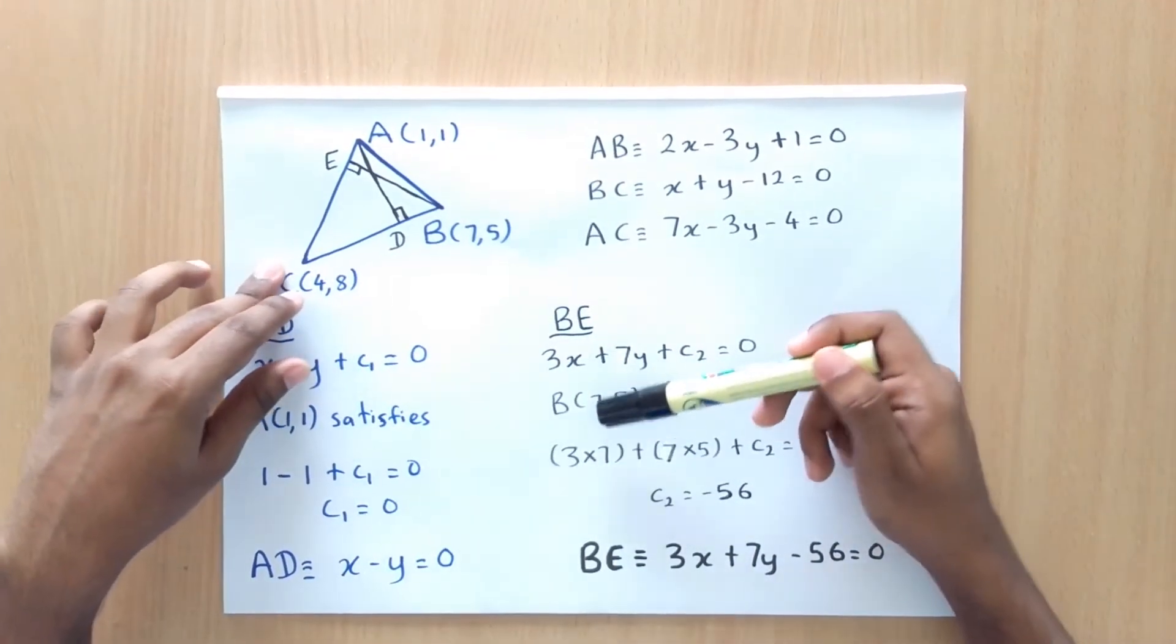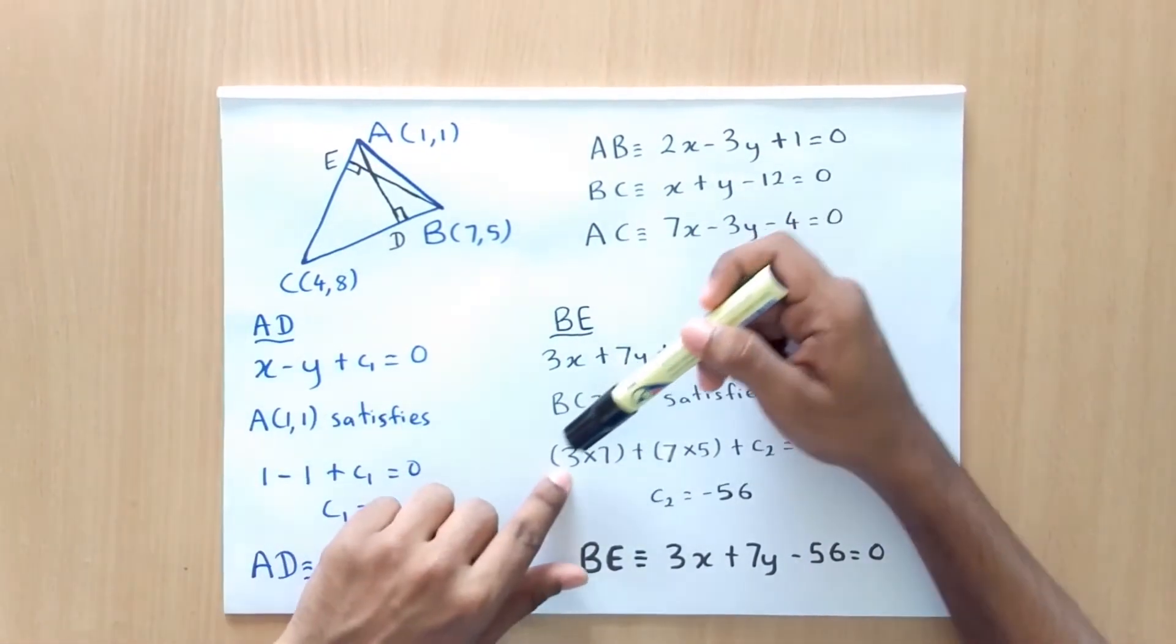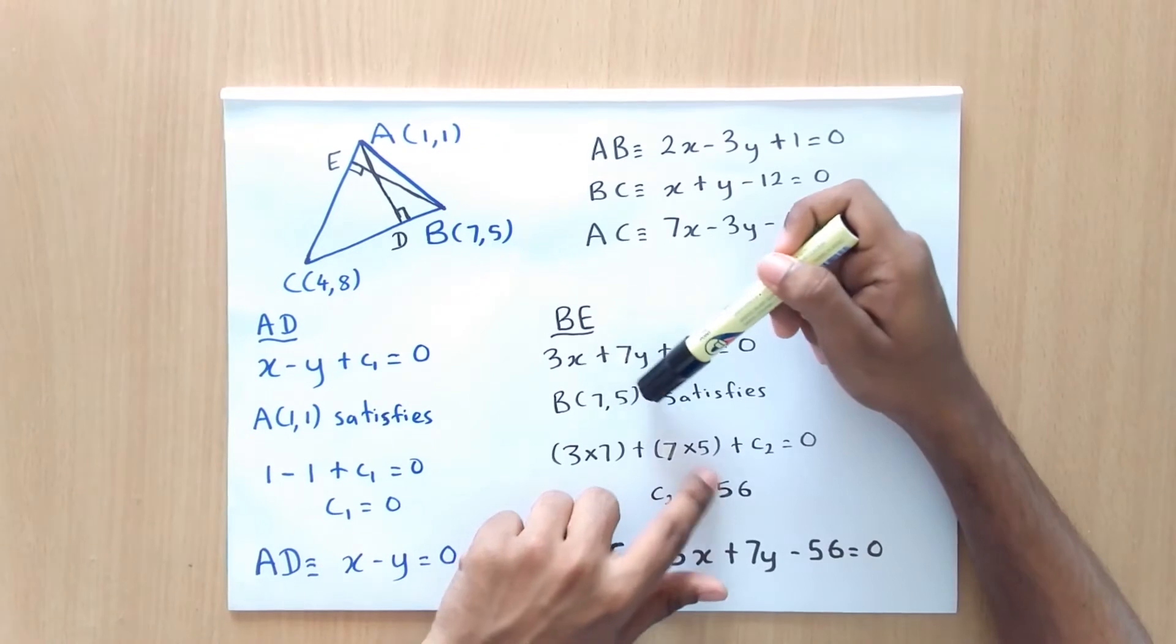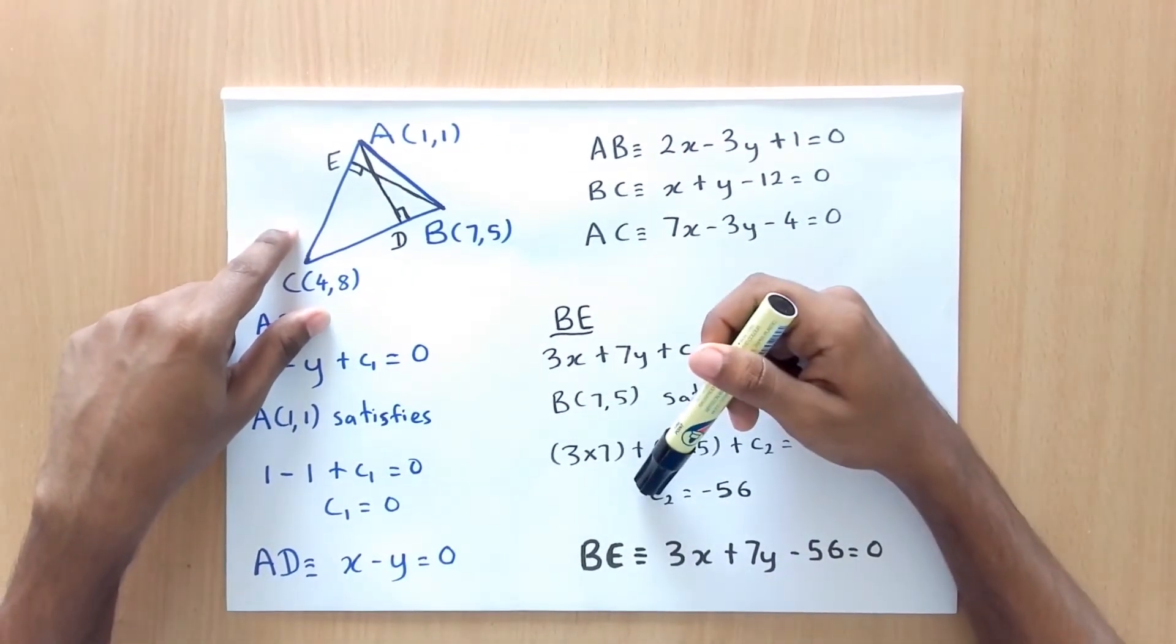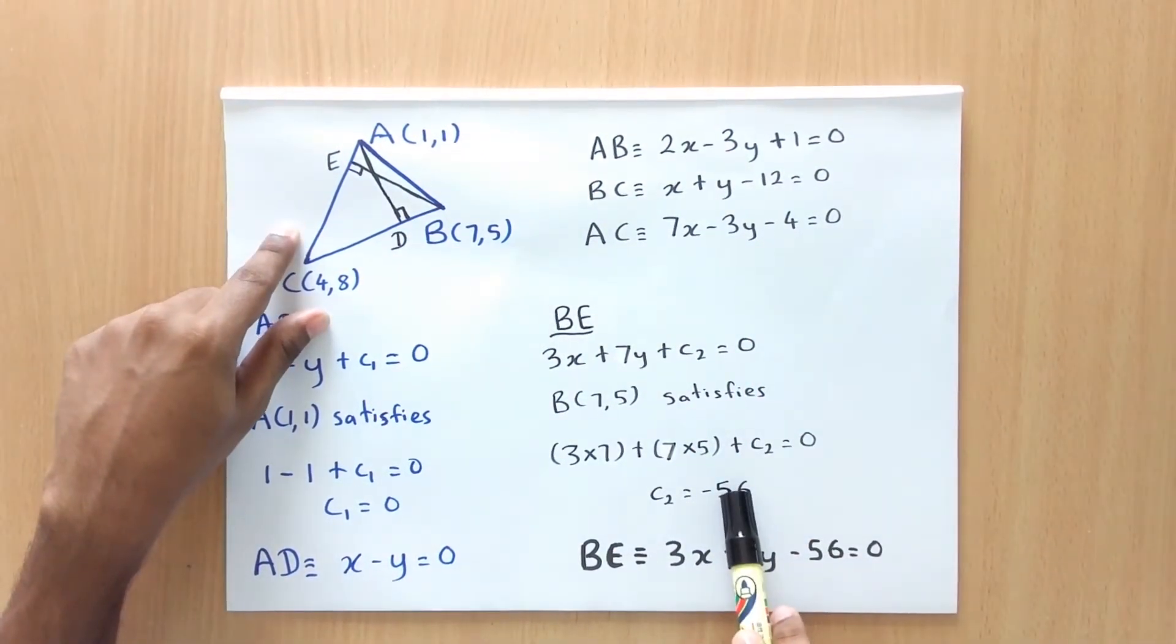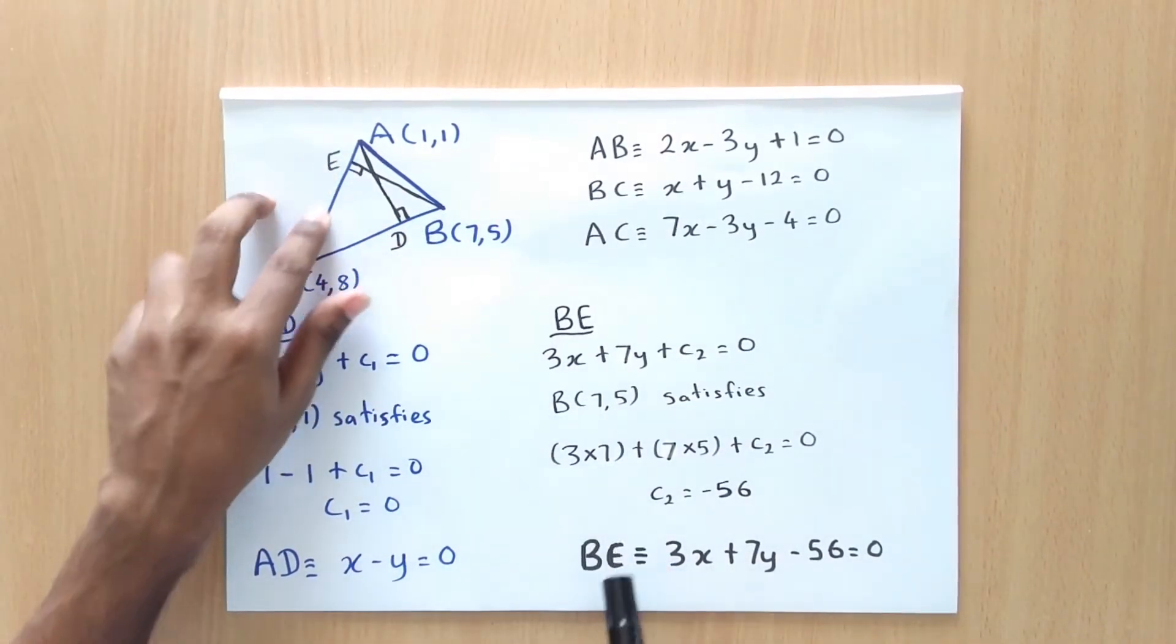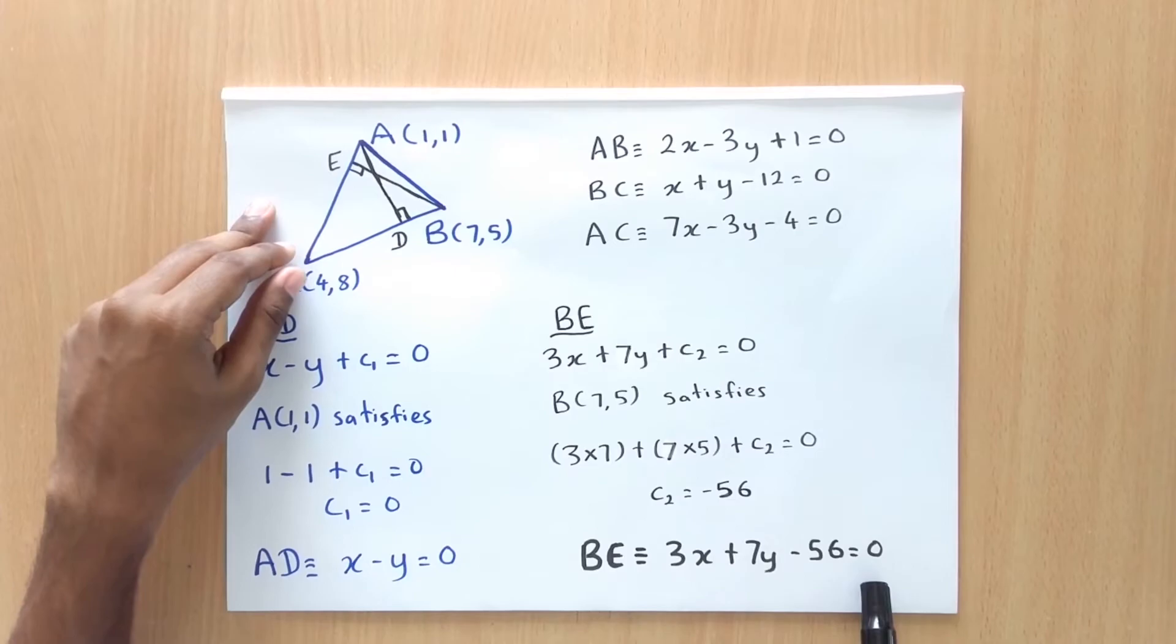So that gives us 3 into 7 plus 7 into 5 plus C2 equals 0. So finally, we can get C2 equals minus 56. So we substitute this here and we get the equation of BE as 3x plus 7y minus 56 equals 0.